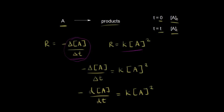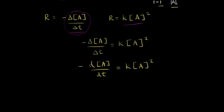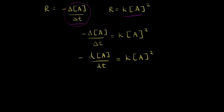We could solve our differential equation and get a function. The first thing we do to solve a differential equation is to separate our variables. We need to put the A's on one side and the dT on the other side. So we divide both sides by A squared — now on the left we have negative d[A] over concentration of A squared — and we multiply both sides by dT, so we get K dT on the right side.